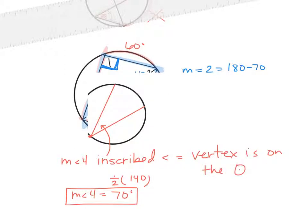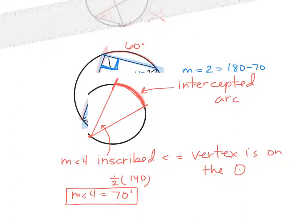With that, you get what's called the intercepted arc. The intercepted arc is just the arc that the angle opens up to — where your angle cuts through. The intercepted arc is the arc that is between those two rays.